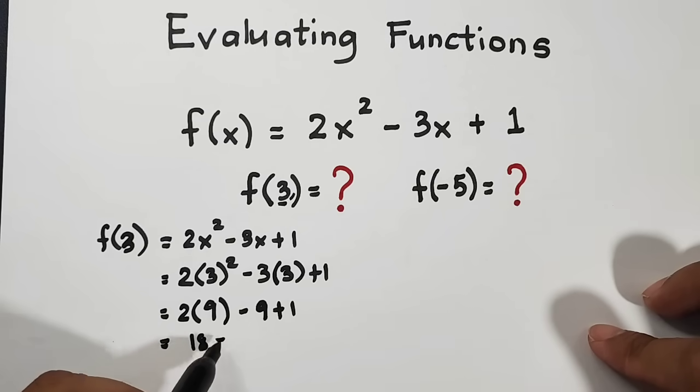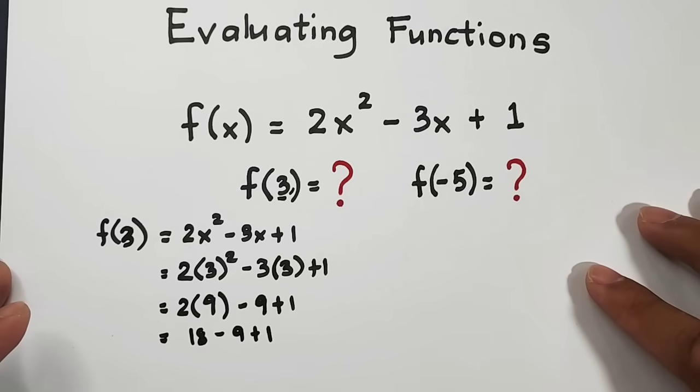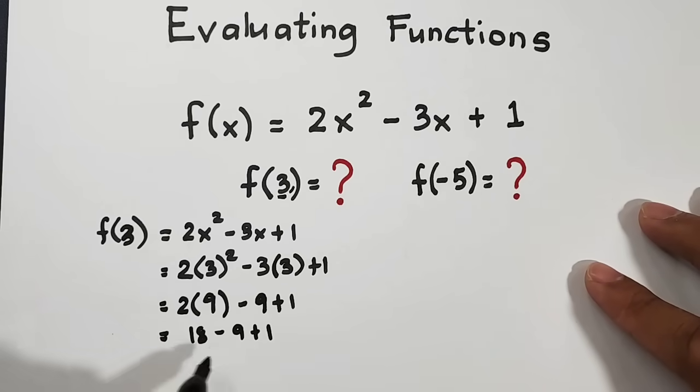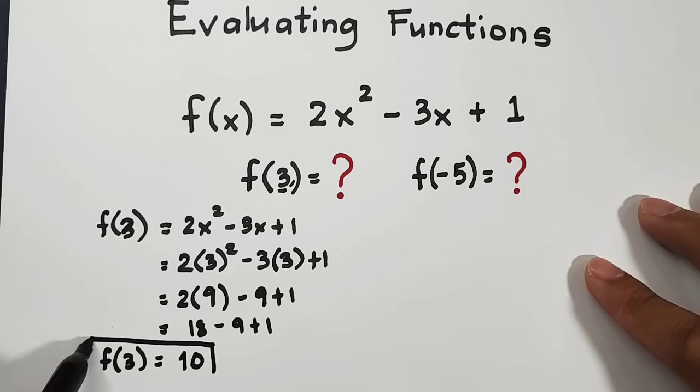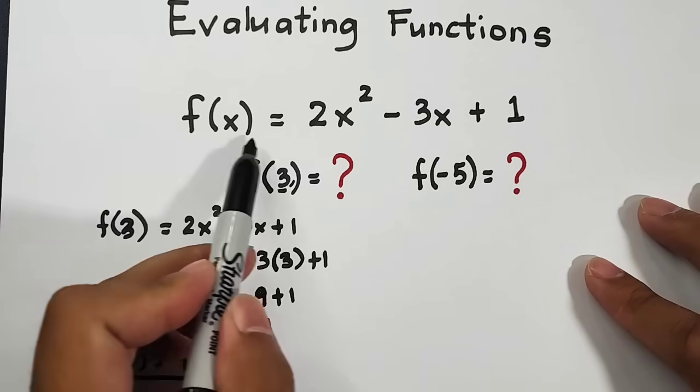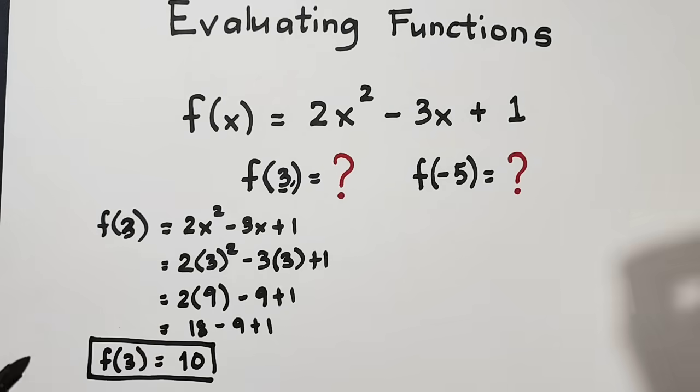Then minus 9 plus 1. So here, we can go with the final step. Your f of 3 is equal to 18 minus 9 is equal to 9 plus 1 that is equal to 10. And this is now the evaluated value of f of 3 given this function. So again, it's that easy guys.